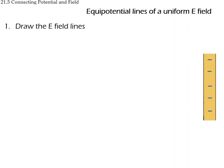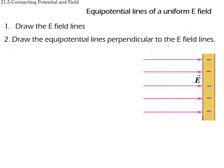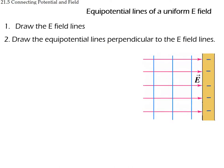To find equipotential lines for a given field, you draw the field lines first, then draw the potential lines perpendicular to those field lines. In the case of parallel plates, the equipotential surfaces are planes parallel to the plates.